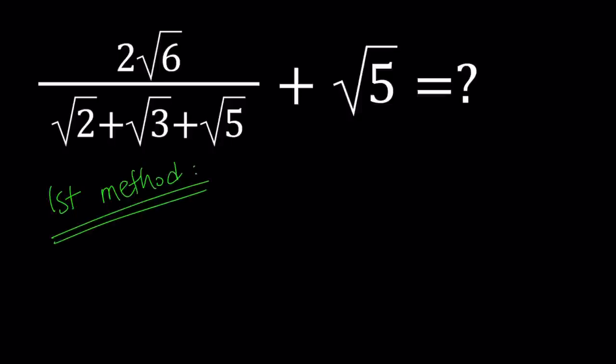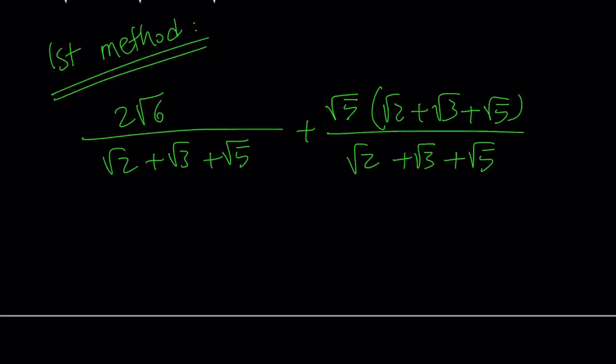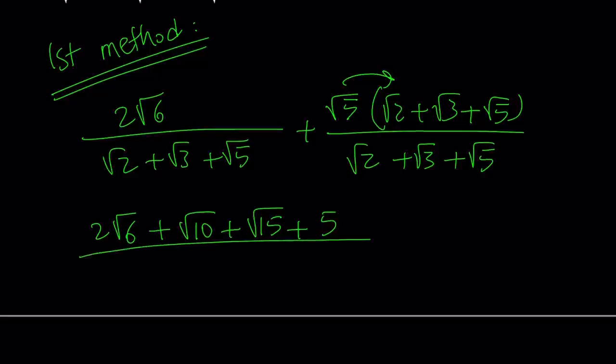So for my first method I'm going to make a common denominator. 2 root 6 divided by root 2 plus root 3 plus root 5, plus root 5 multiplied by the common denominator and divided by that. Now since we have a common denominator we can add the numerators. We get 2 times root 6 plus, we're going to distribute here, root 10 plus root 15 plus 5. That is going to be divided by root 2 plus root 3 plus root 5.